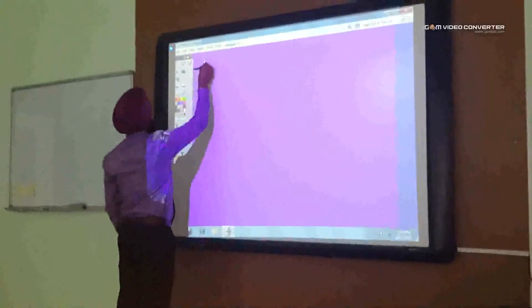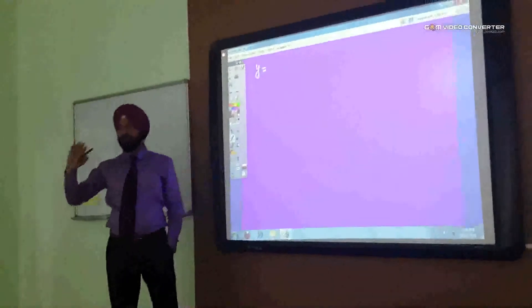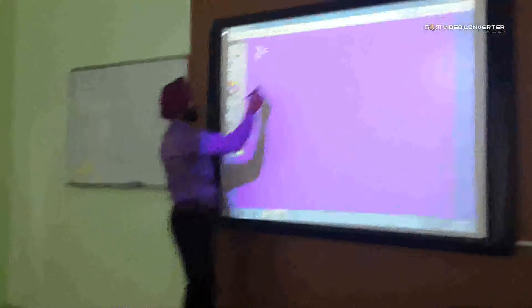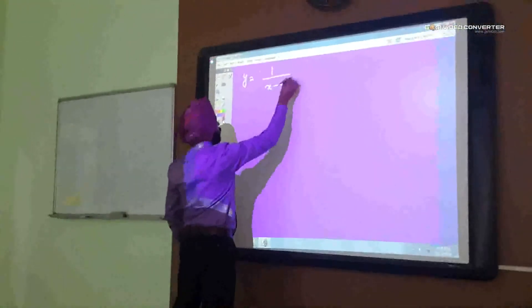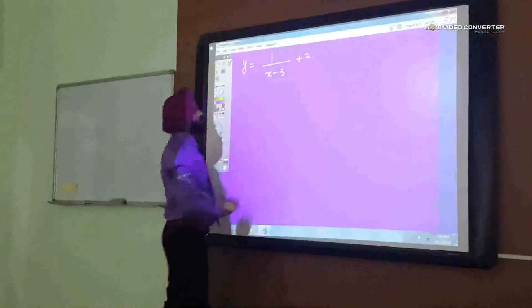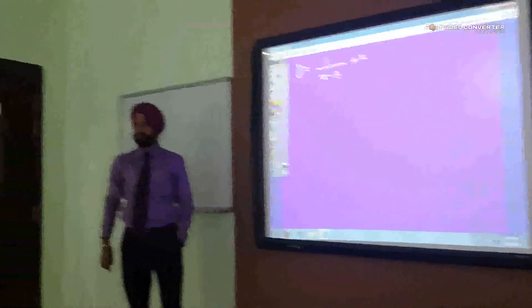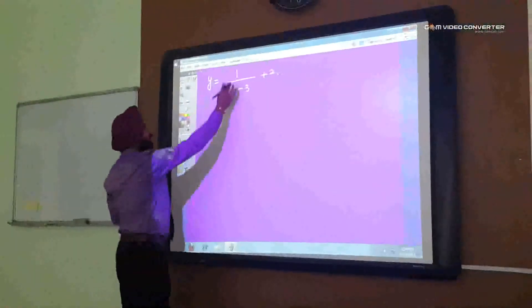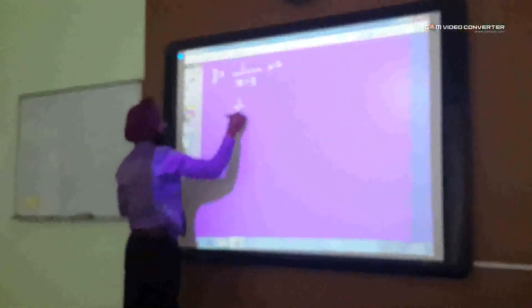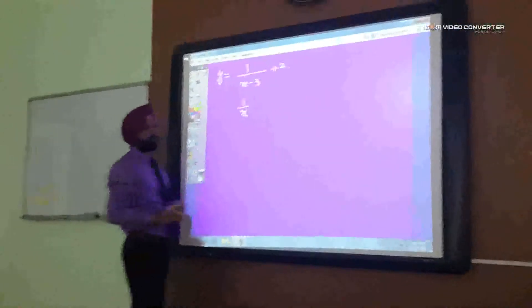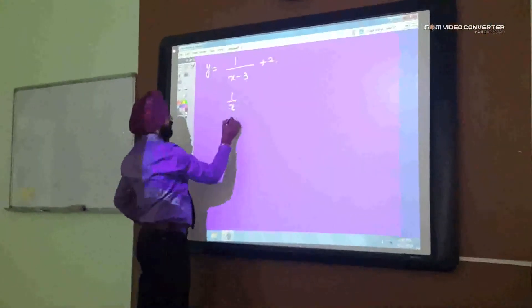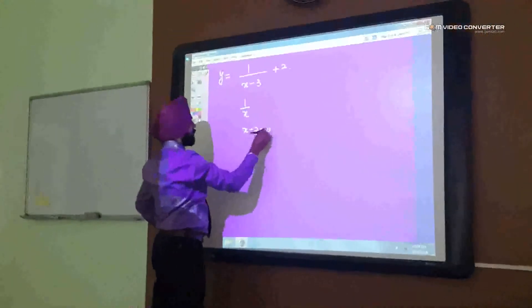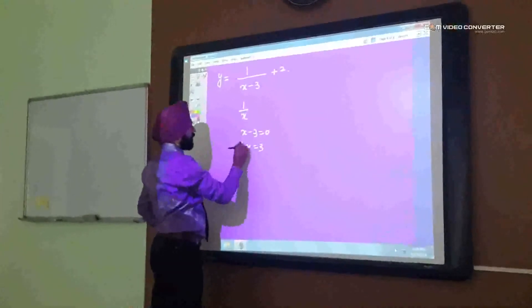in which two translations are there both horizontal and vertical. So let's say 1 upon x minus 3 plus 2. Okay, so if you compare x minus 3 with 1 by x the difference is 3. Okay, so x minus 3 is 0 so x equals to 3.